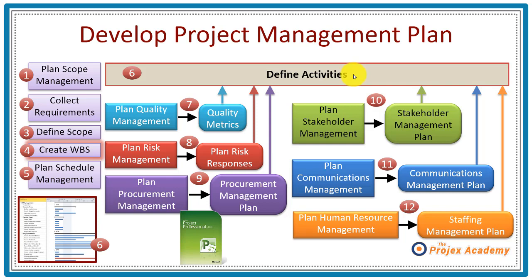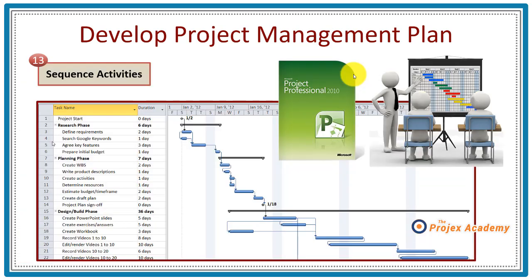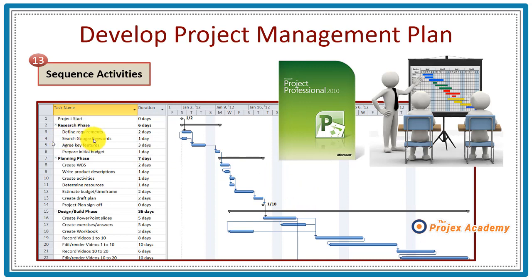Although steps seven through twelve are quite iterative and there's nothing sacrosanct about the sequence, what's important is that all of these are carried out and these activities are combined, which brings us to step thirteen — sequencing the activities. Microsoft Project will pay huge dividends here. As part of a planning workshop, usually using post-it notes — one for each activity — you work out the sequence and bring that back into the planning tool.